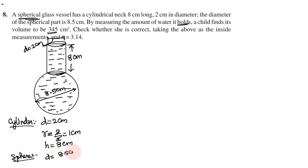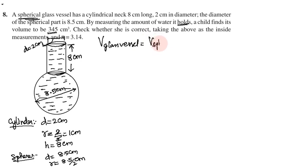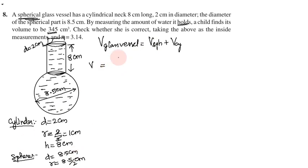The diameter of the sphere is 8.5 cm, so the radius is 8.5 divided by 2. The volume of the glass vessel equals the volume of the sphere plus the volume of the cylinder. Volume of sphere is (4/3)πr³, and volume of cylinder is πr²h.